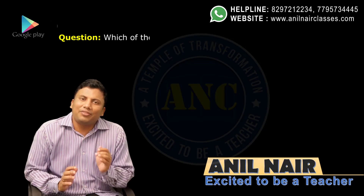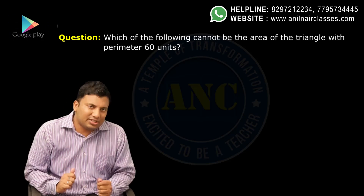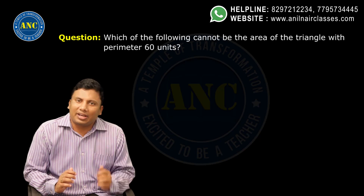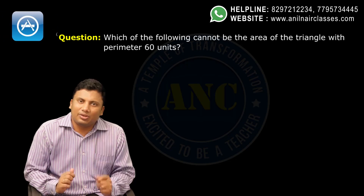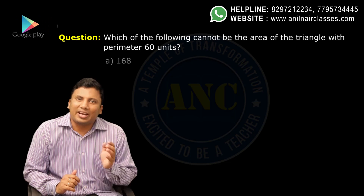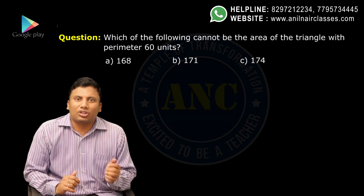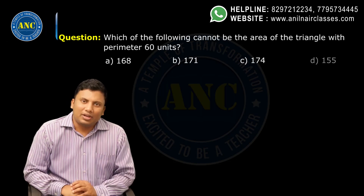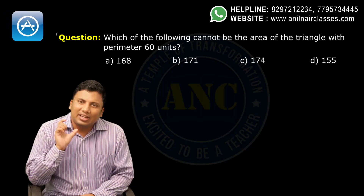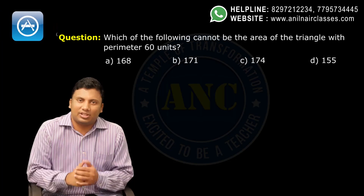Question: Which of the following cannot be the area of the triangle with perimeter 60 units? First option: 168. Second option: 171. Third option: 174. Fourth option: 155. Perimeter is given. He has not mentioned which triangle it is — he is asking which of the following cannot be the area of the triangle with perimeter 60 units.